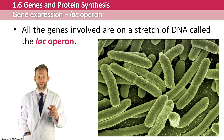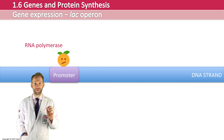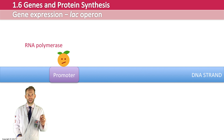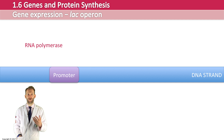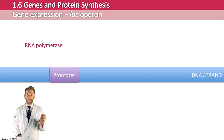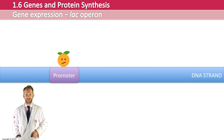When protein synthesis normally occurs, RNA polymerase binds to a promoter region and just reads the DNA code in order to transcribe the messenger RNA — that's the normal process. On this strand of DNA, there are three structural genes to make the enzymes required to break down lactose so that the E. coli can use the sugars.